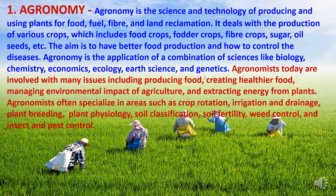The first branch is Agronomy. Agronomy is the science and technology of producing and using plants for food, fuel, fiber and land reclamation. It deals with the production of various crops which includes food crops, fodder crops, fiber crops, sugar, oil and seeds etc. The aim is to have better food production and how to control the diseases.